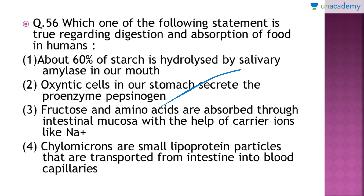Option two is wrong — oxyntic cells (parietal cells) secrete HCl and intrinsic factors essential for absorption of vitamin B12, not pepsinogen. Mucus neck cells (goblet cells) secrete mucus, and peptic cells or chief cells secrete proenzyme pepsinogen. Option four is also wrong — chylomicrons are not lipoproteins but fat globules transported from the intestine into blood capillaries.